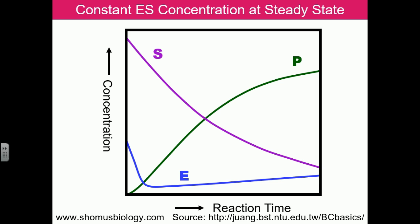The enzyme-substrate (ES) complex starts to form from the beginning, but once it forms, its concentration remains balanced. This is the beauty of the steady state assumption: the enzyme-substrate complex is present in a steady state because substrate is being utilized at a specific rate and product is being produced at a specific rate.